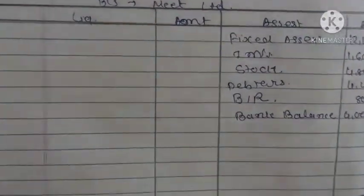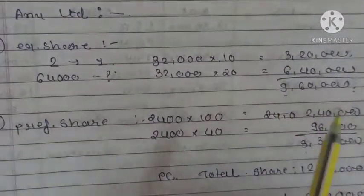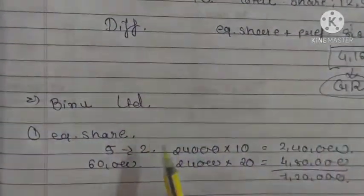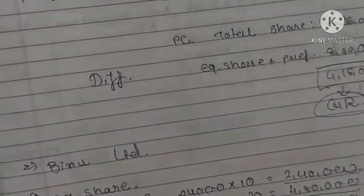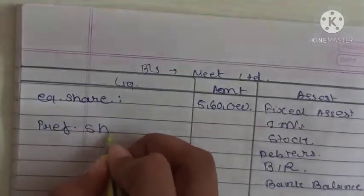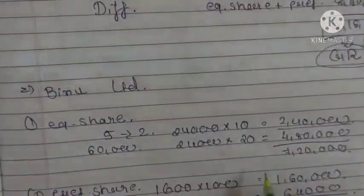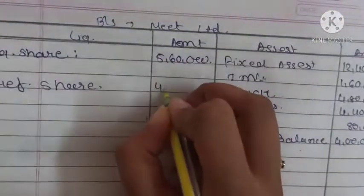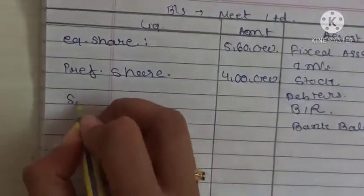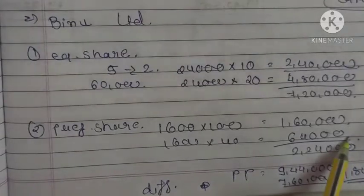Asset side is written. Now liabilities. First, equity share capital — we already calculated: Anu Ltd ₹3,20,000 + Binu Ltd ₹2,40,000 = ₹5,60,000. Then preference share capital: Anu Ltd ₹2,40,000 + Binu Ltd ₹1,60,000 = ₹4,00,000. Then security premium: ₹6,40,000 + ₹96,000 + ₹4,80,000 + ₹64,000 = ₹12,80,000.